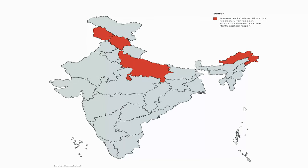In India, saffron is cultivated in Jammu and Kashmir. Attempts have also been made to cultivate it in Himachal Pradesh, Uttar Pradesh, Arunachal Pradesh, and the north-eastern region.